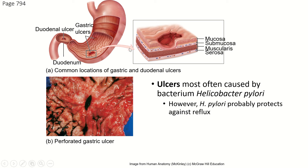Ulcers start with the mucosa, and if they are left untreated can actually work their way all the way through the wall of the stomach, creating a perforated ulcer — which is an actual hole into the peritoneal cavity. That, as you might imagine, will cause a great deal of pain.